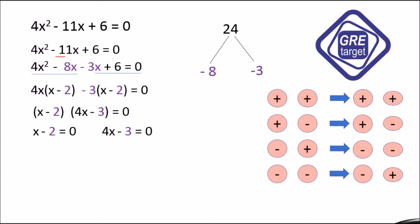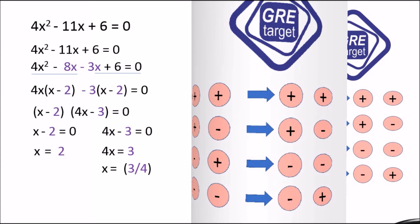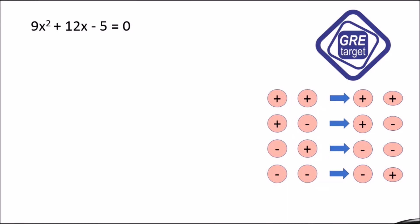Now x - 2 = 0 gives x = 2. In 4x - 3 = 0, add 3 to both sides to get 4x = 3, then divide both sides by 4 to get x = 3/4.